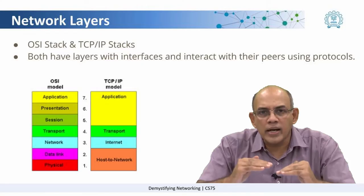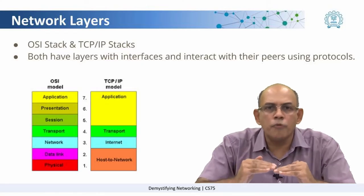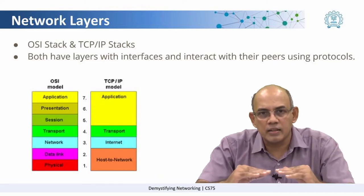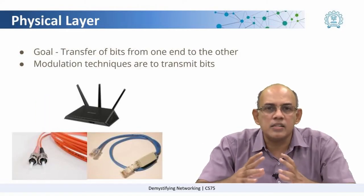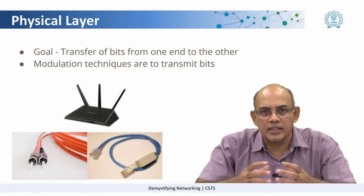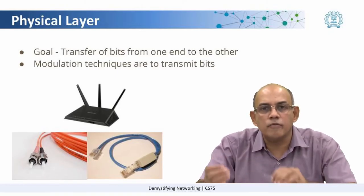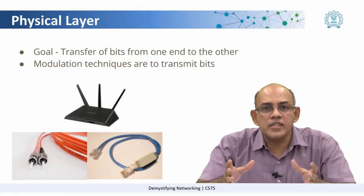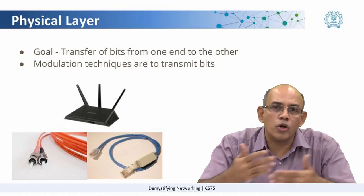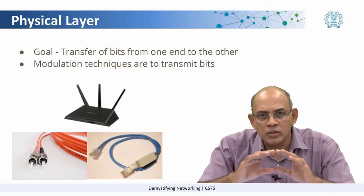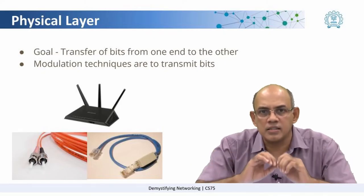Conceptually, let us look at it from the bottom moving upwards. The bottommost layer is the physical layer. What does the physical layer consist of? It consists of wires and equipment of that nature. Its job is to carry the bits from one end to the other. So the physical layer concerns itself with modulation techniques and how to transmit the bits.